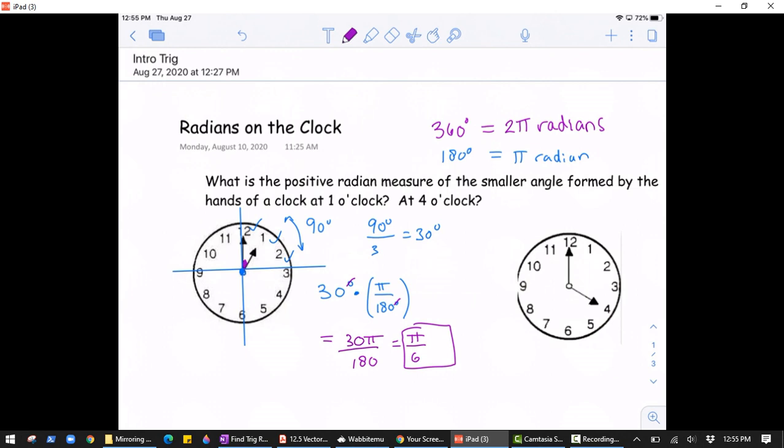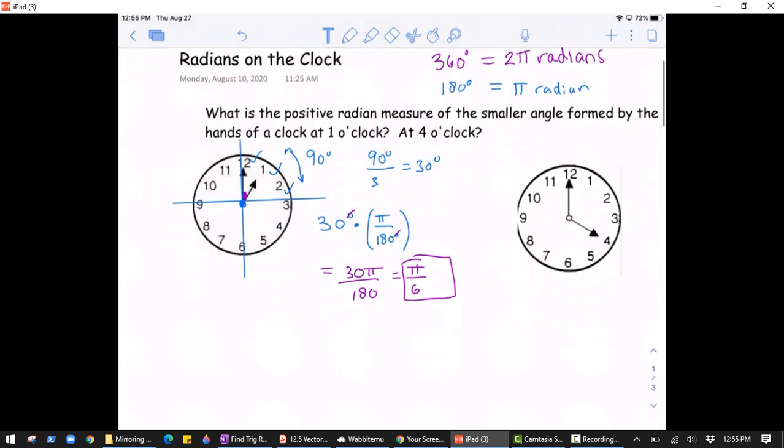So another way you could have done that if you didn't like that approach is you could have just noted that since we're looking at 1/12th, right, the angle between these two hands here, the one at the 12 and the one at the 1, that's 1/12th of the entire clock. And we know that 2π radians are what are found in a full circle. So we just want 1/12th of 2π, which gives you 2π over 12 or π over 6 radians. Okay, so either way you get the same answer.